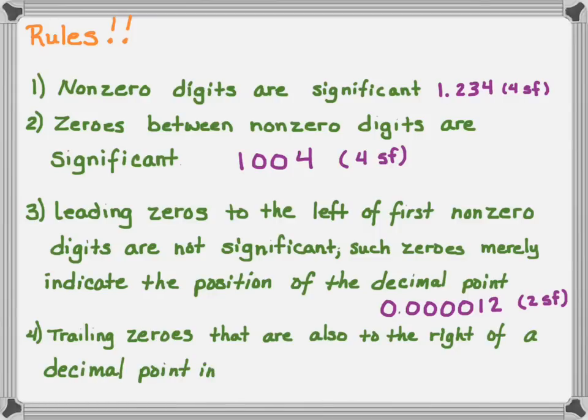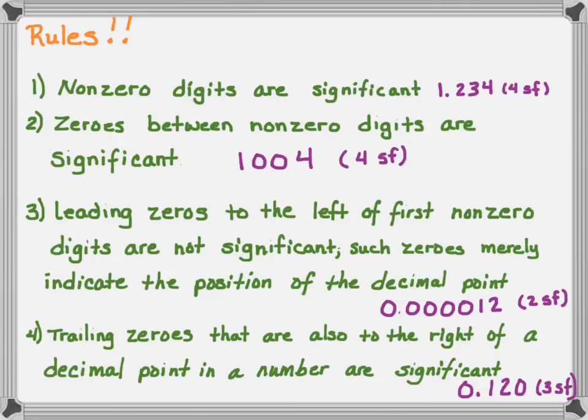Rule four: trailing zeros that are to the right of a decimal point in a number are significant. So for the number 0.120, the leading zero is not significant, but the trailing zero is significant. So 1, 2, and 0 are significant, and I have three significant figures.